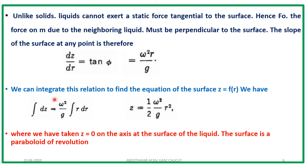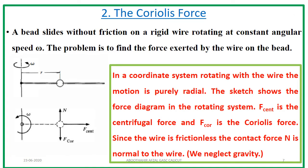That is the end of the first problem. The conclusion is that if a bucket with water spins along its own axis, the surface of the water will be a paraboloid of revolution. Next problem: a bead slides without friction on a rigid wire rotating at a constant angular speed omega. The problem is to find the force exerted by the wire on the bead. The wire rotates along an axis perpendicular to its length — that is the z-axis — and the angular velocity omega is along the z-axis.